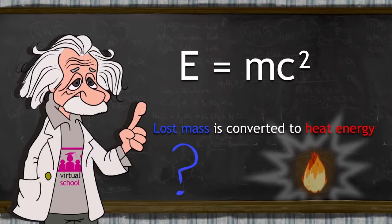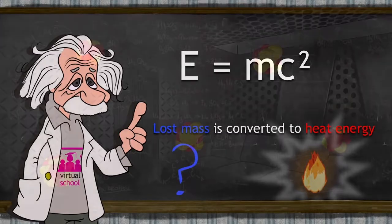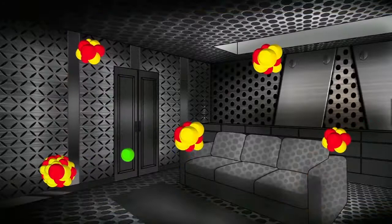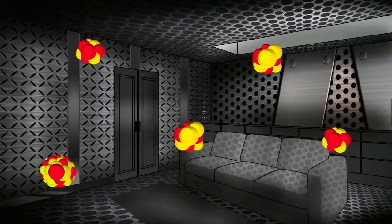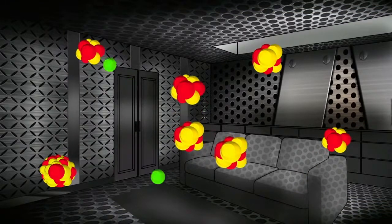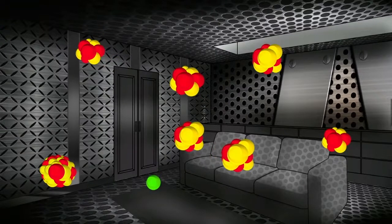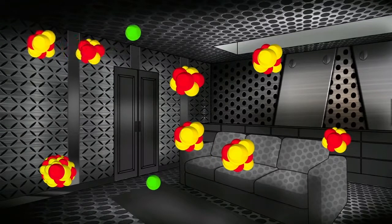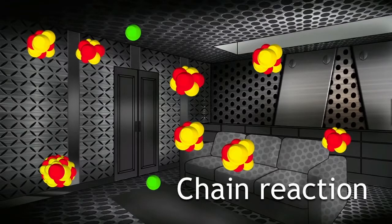But it gets really exciting when you put a bunch of these atoms together. As one atom splits up, it releases some energetic neutrons ready to split up some more atoms, which in turn releases more energetic neutrons, which will split up some more atoms and on and on. This is known as a chain reaction.